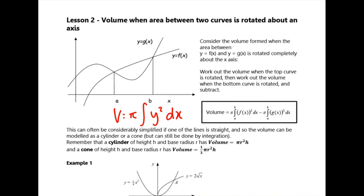Remember back to single maths: if you were asked to find the region enclosed by two curves, you would integrate f(x) between limits a and b, integrate g(x) between the same limits, and take them away from each other to get the remaining area. Similarly, if you were trying to find the volume formed when this area is rotated around the x-axis, you'd work out the volume for f(x), subtract the volume for g(x). Because they have the same limits, you can combine the integrals and put f(x) squared minus g(x) squared together.